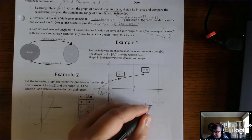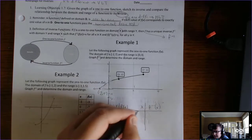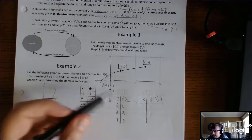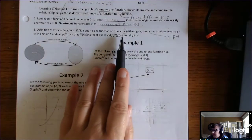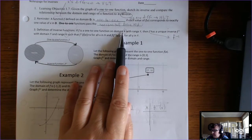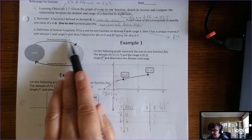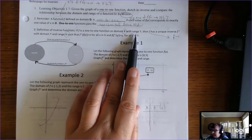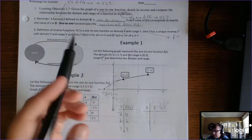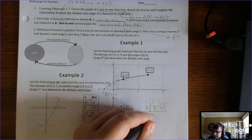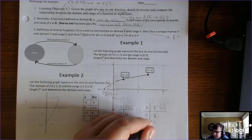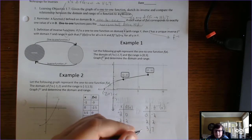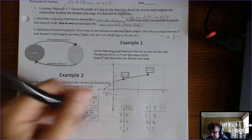Here's the big deal: to graph the inverse, all you have to do is switch these ordered pairs, because the domain of the function is the range of the inverse, and the range of the function is the domain of the inverse. So I'll just switch these ordered pairs. 2, 2 doesn't change. And then 7, 3 becomes 3, 7.